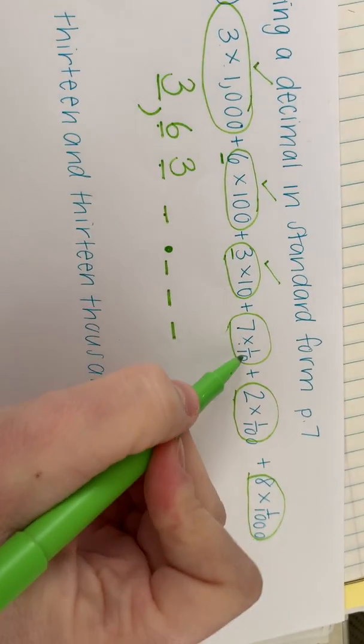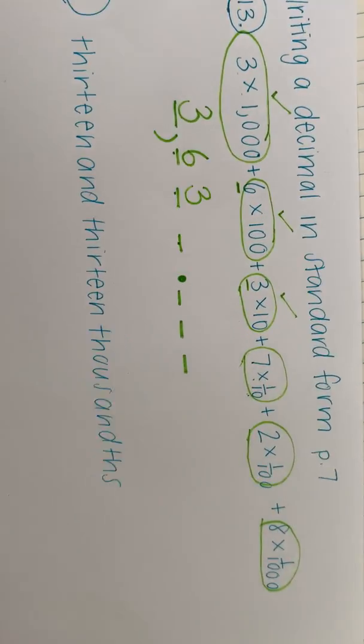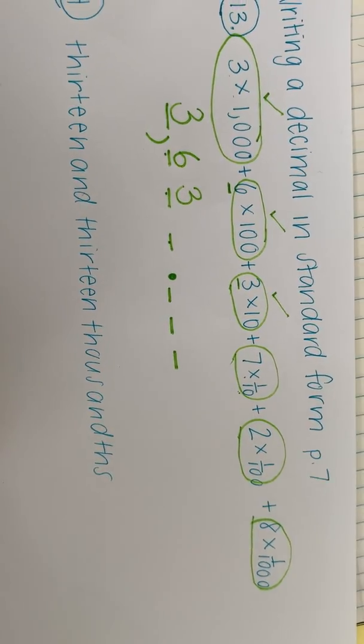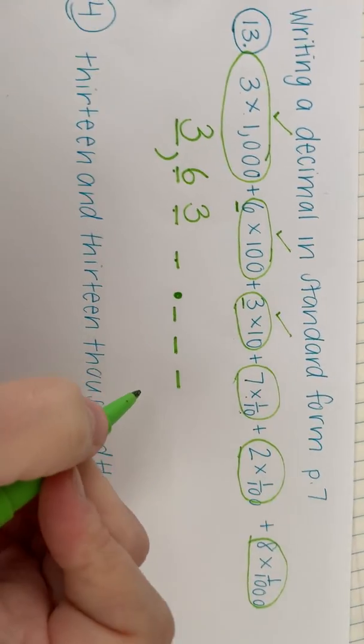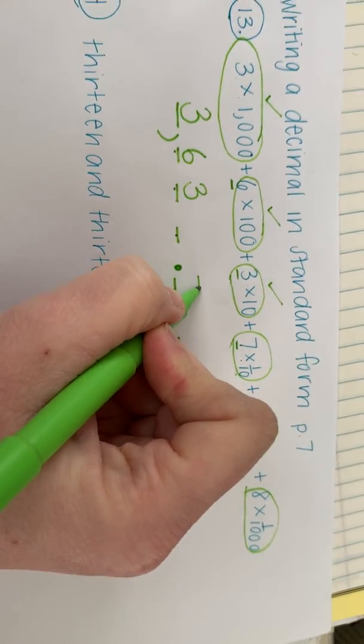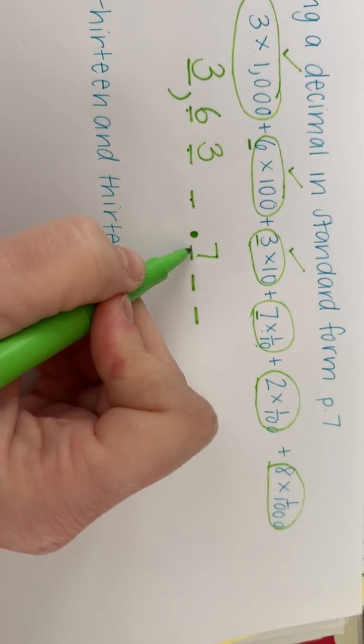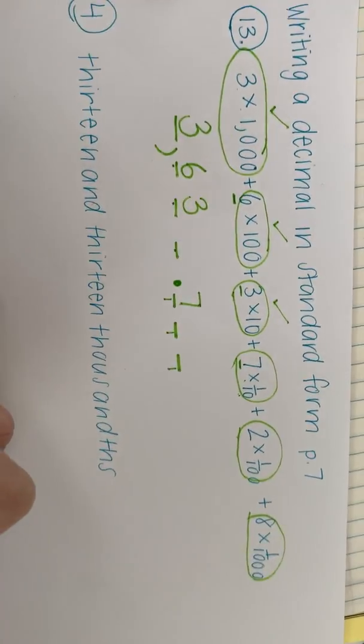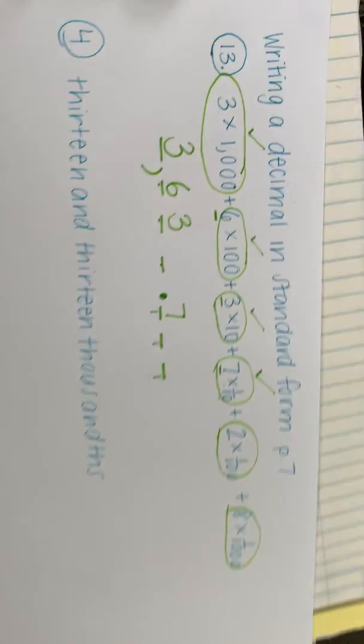Now we're doing 7 times 1 tenth. Well, 1 tenth is going to be a big old hint that you're going to put it in your tenth spot. So a 7 in your tenth spot. Remember this is tenth, hundredth, thousandth. Going this way. I've got that done. I can check it off.